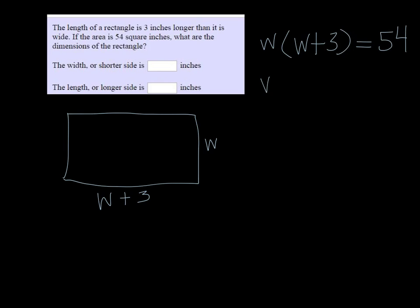We can solve this. We get w squared plus three w. We distribute. To solve a quadratic, you need to have one side to be zero. So I'm going to subtract that 54 on both sides.